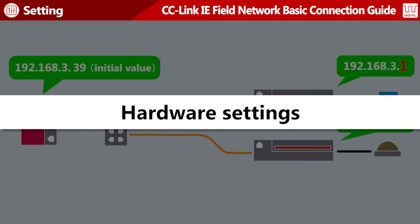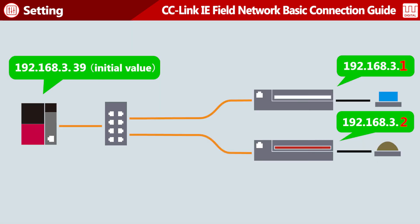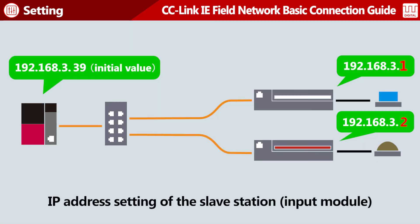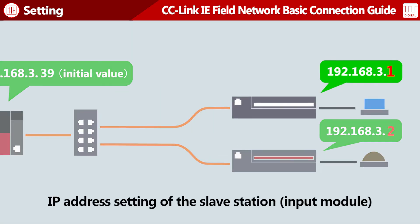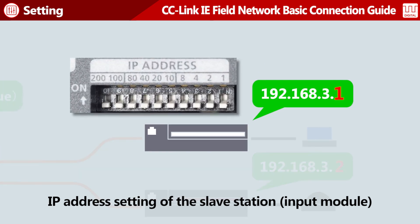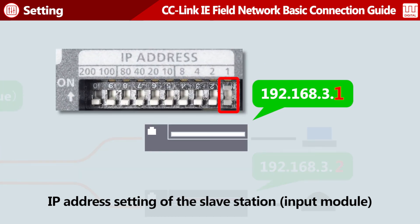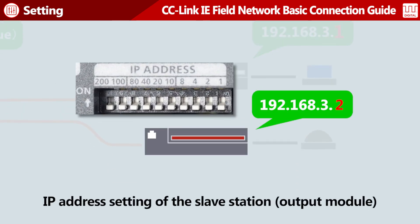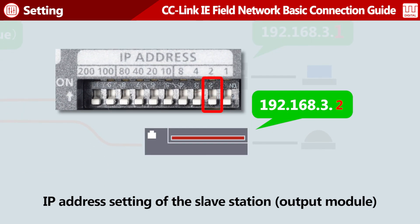The hardware setting procedure is explained next. Set an IP address for slave stations using the switches on the front of the modules. Set 1 for the input module and set 2 for the output module.